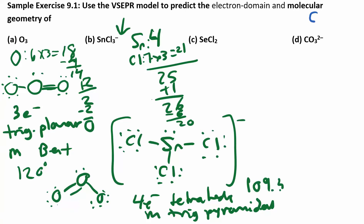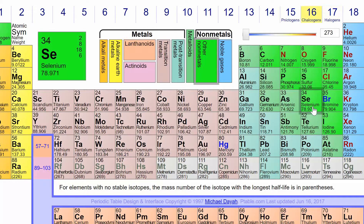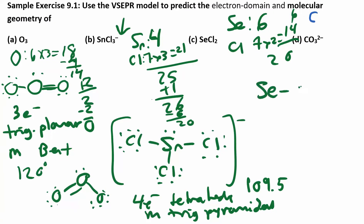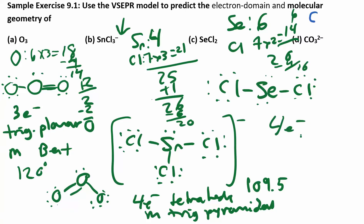The bond angles are approximately 109.5° since the electron domain geometry is tetrahedral. Now let's do SeCl₂. Selenium has six valence electrons and chlorine has seven times two equals 14, plus six gives 20. Selenium is in group 16, so it has six valence electrons — don't count the D block. With 20 electrons, put Se in the middle with two Cl atoms, distribute the electrons, and you get four electron domains. The electron domain geometry is tetrahedral and the molecular geometry is bent.